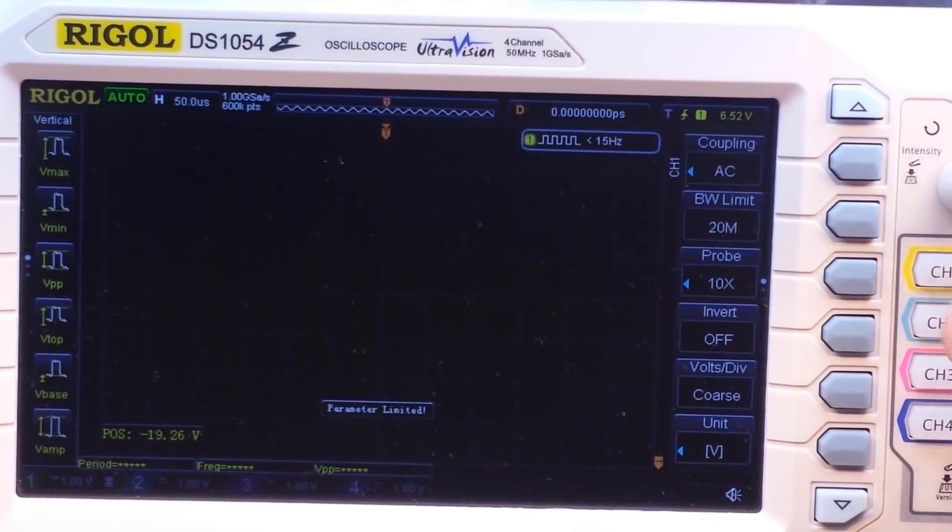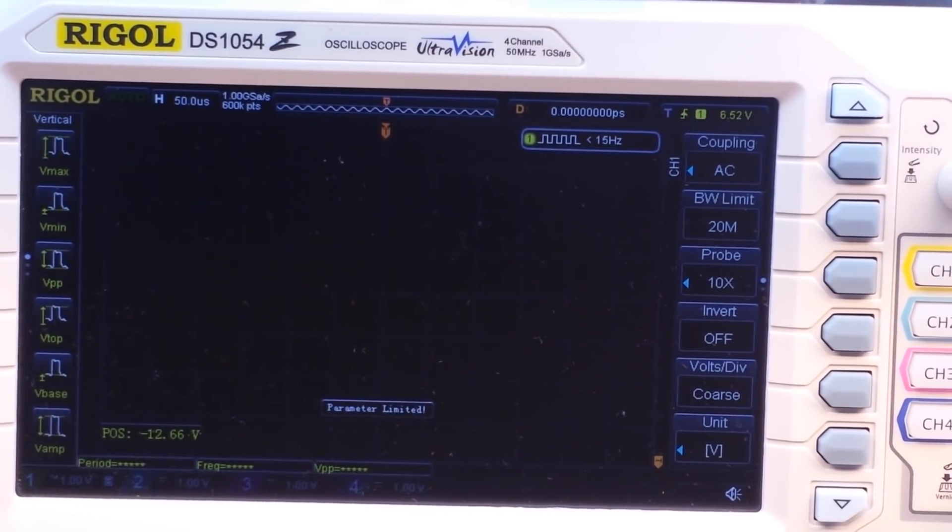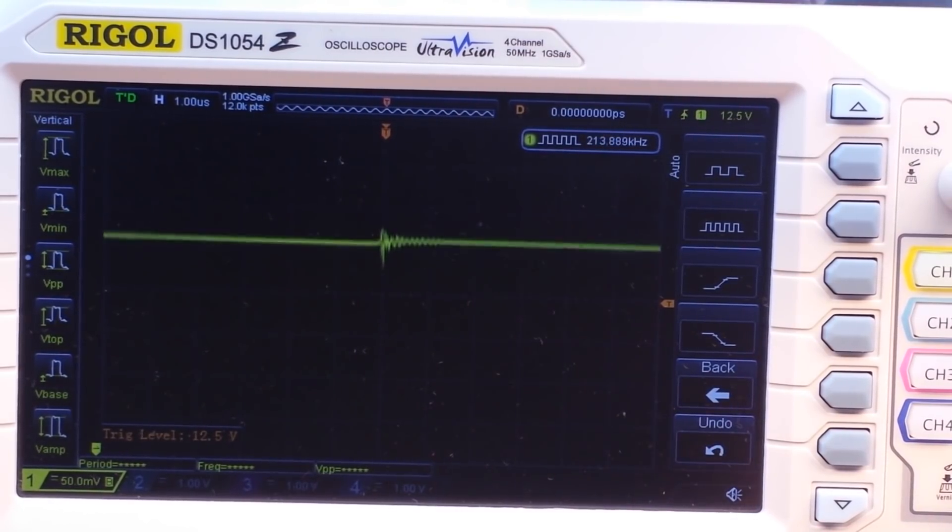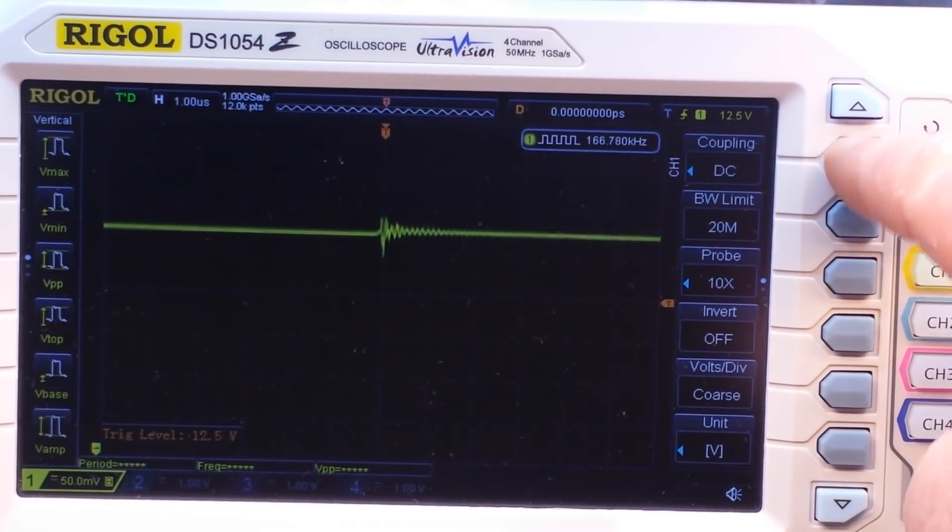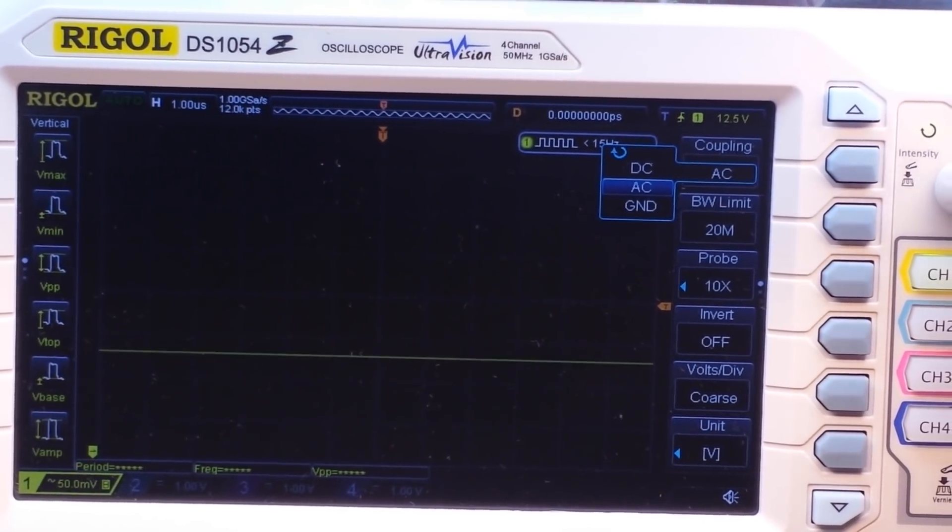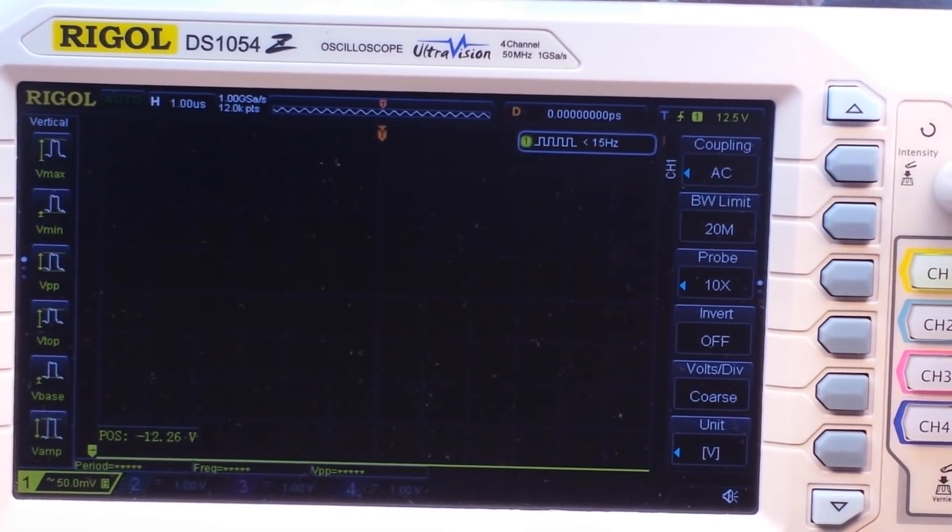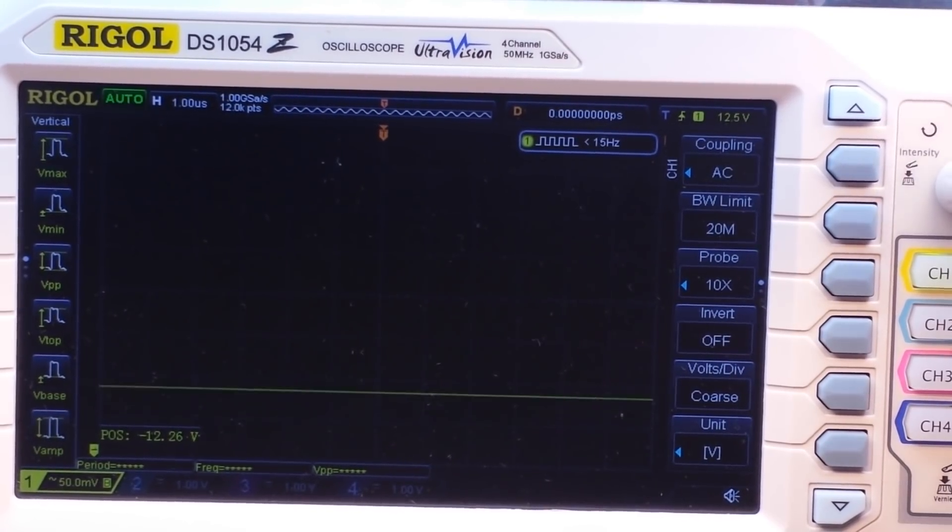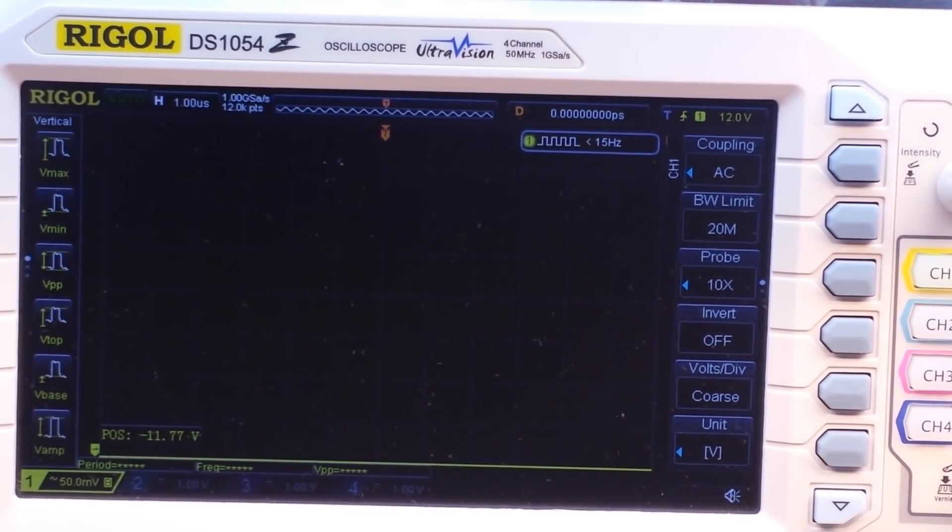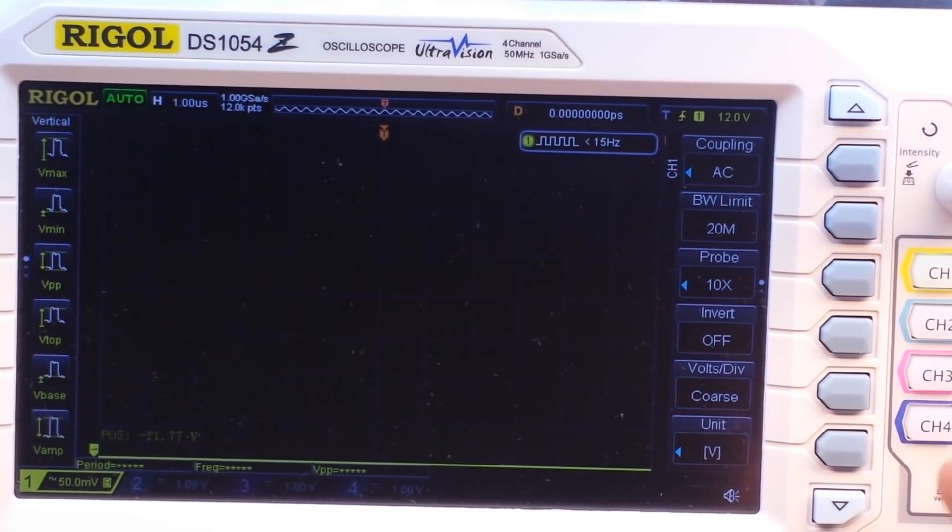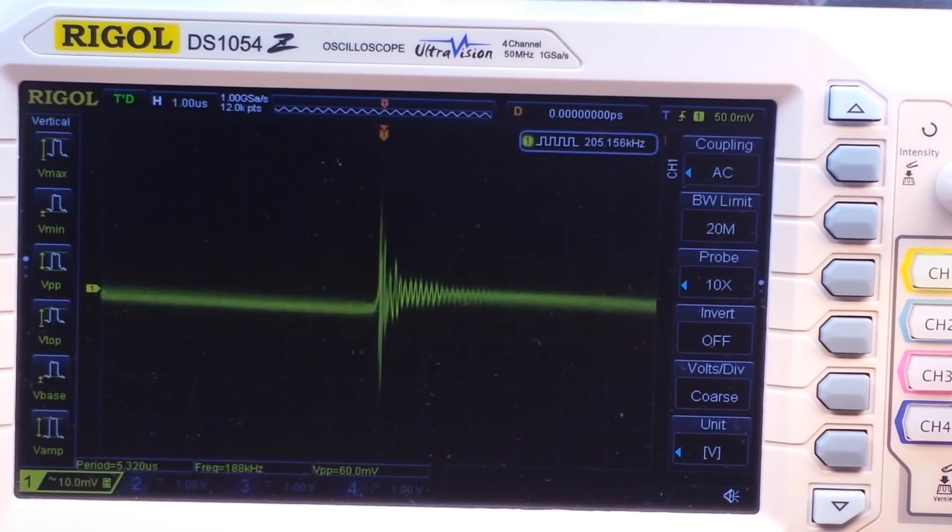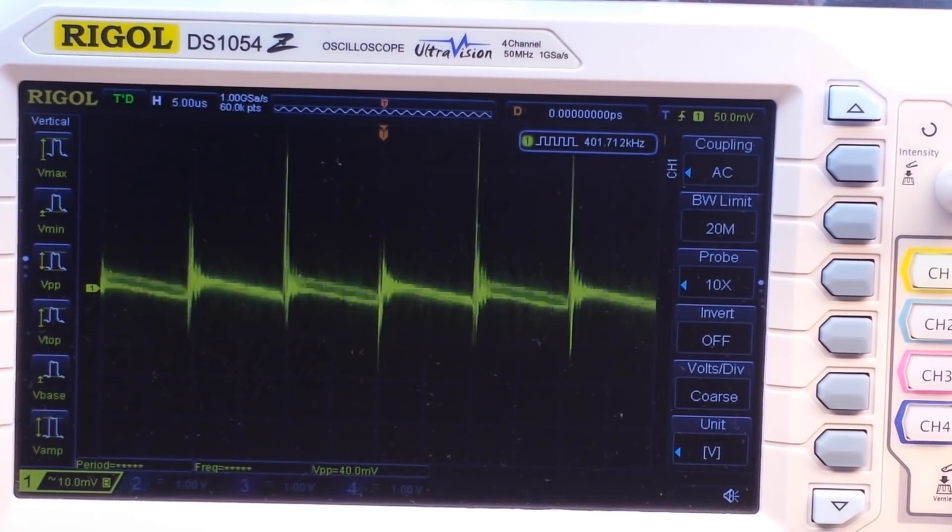Look at that. All right, with the auto button, let it find it. I'm still learning this new scope here. Okay, there we go. Now we'll go channel one, AC couple it. Come on. There you go. What the - I just bring you up here. What are you doing to me? Ah, there we go. Always a lot to learn when you have a new scope. So take a look at that.